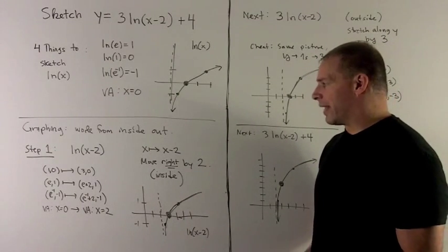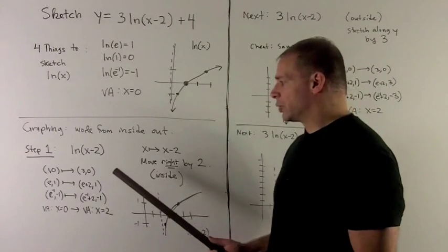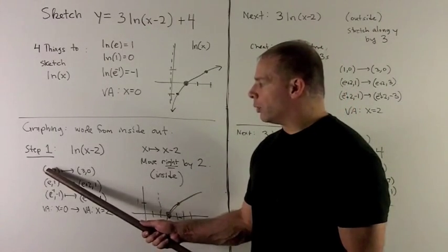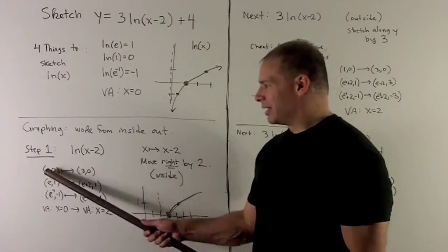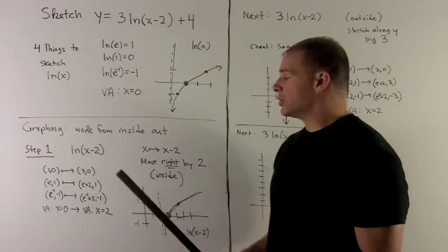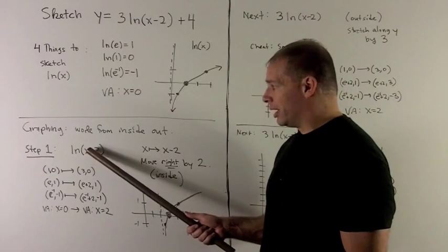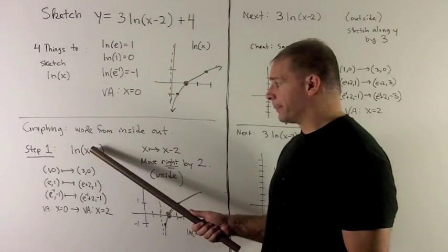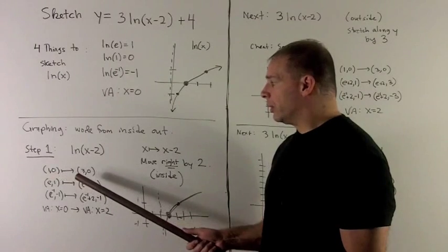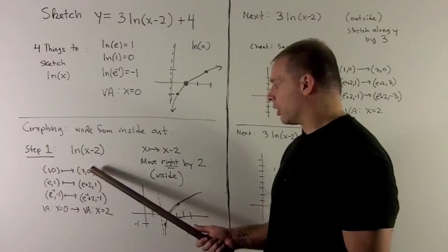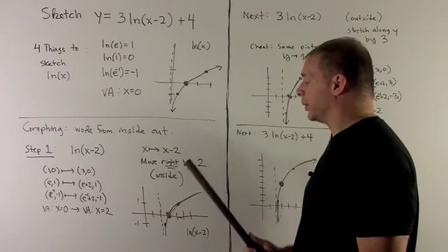If you want to understand how that works, think of it this way. The point 1, when I put it into natural log of x, gives me a 0 out. So to check that, we think about what number would I put in here to get 1 so that a 0 comes out. Well, that would be 3, so 1, 0 is going to go to the point 3, 0 if I move to the right by 2.